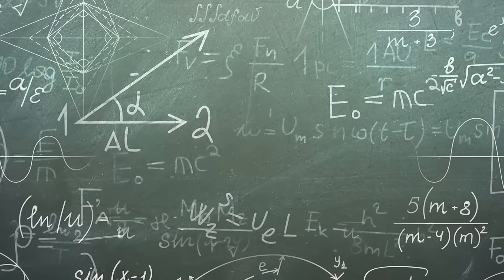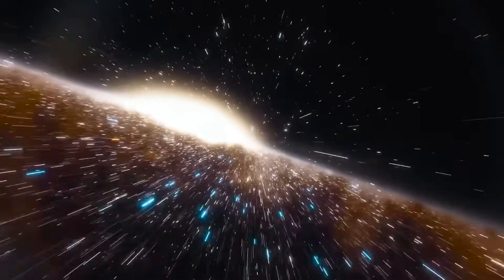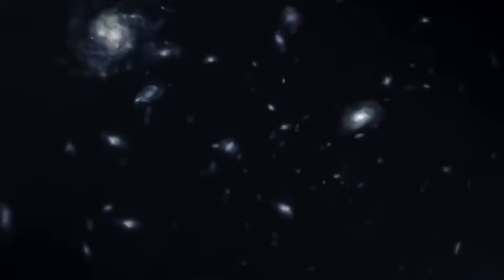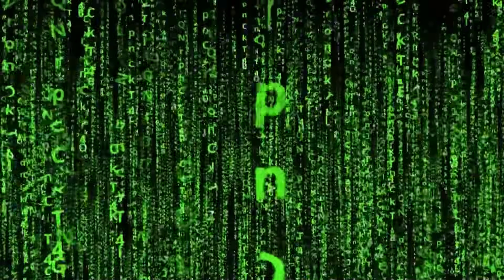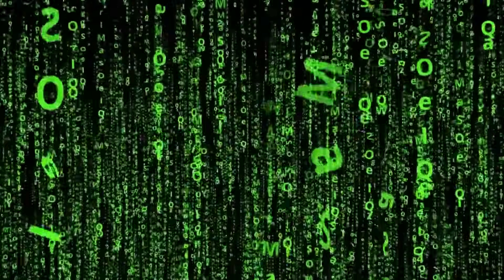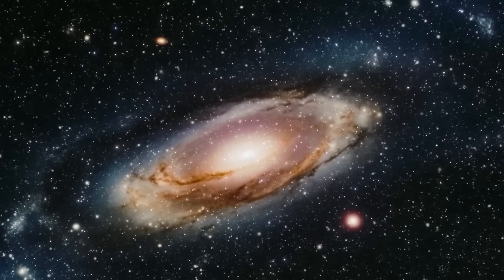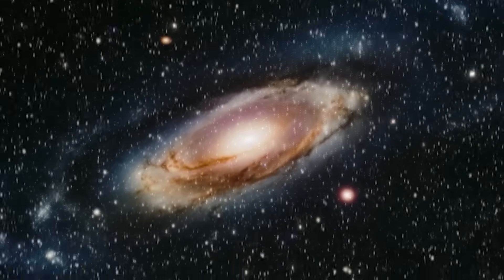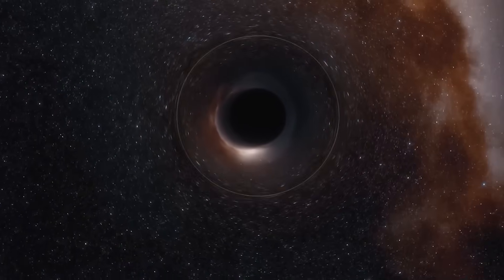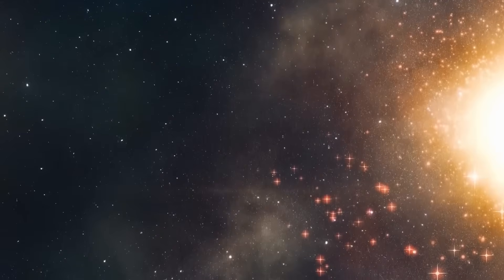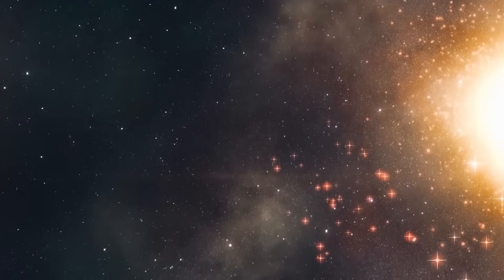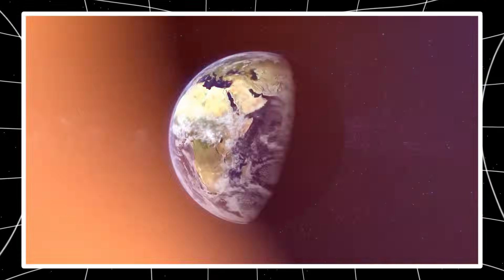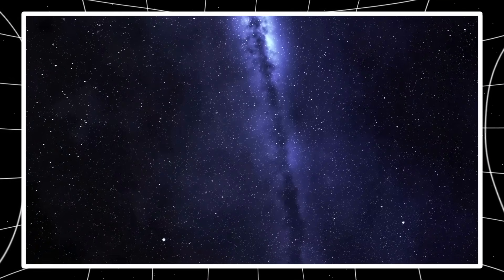The deeper Webb looks, the more it pushes us toward a terrifying possibility: that the universe may not have an edge. In Hubble's era we spoke of the observable universe, a sphere 93 billion light years across limited by the time light has had to travel. But Webb's revelations hint that what we see may only be the faintest slice of an endless expanse.